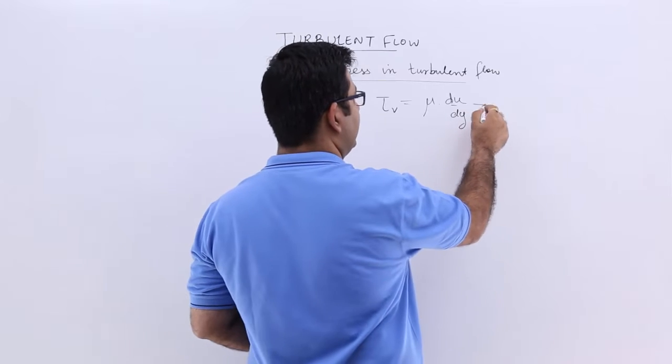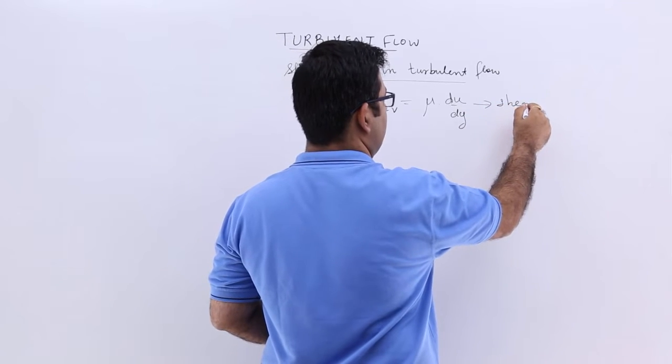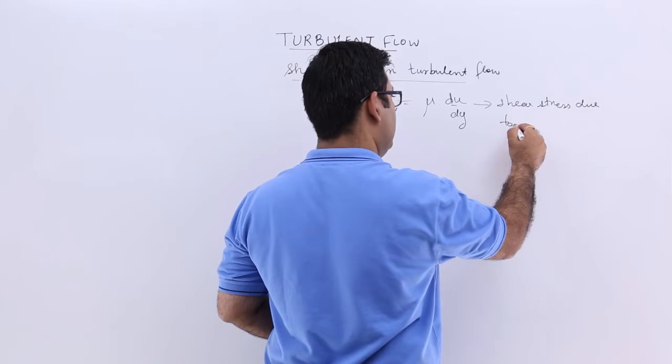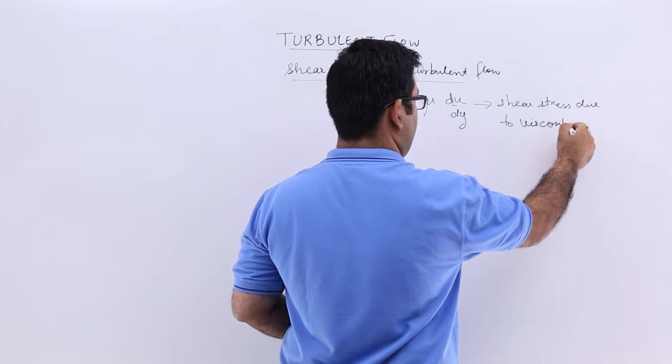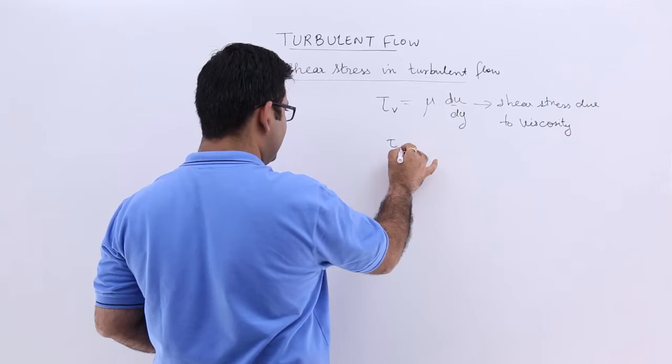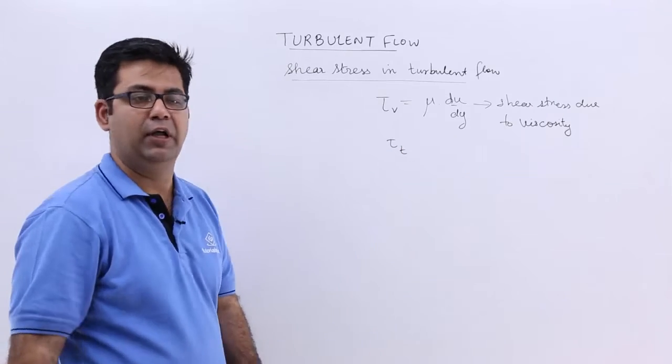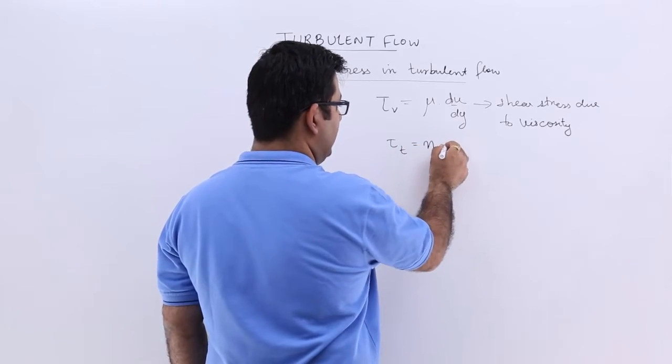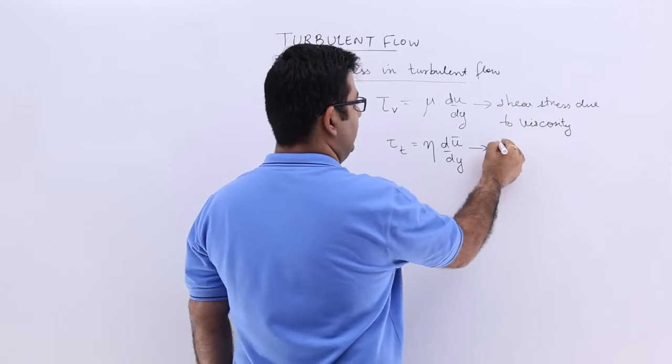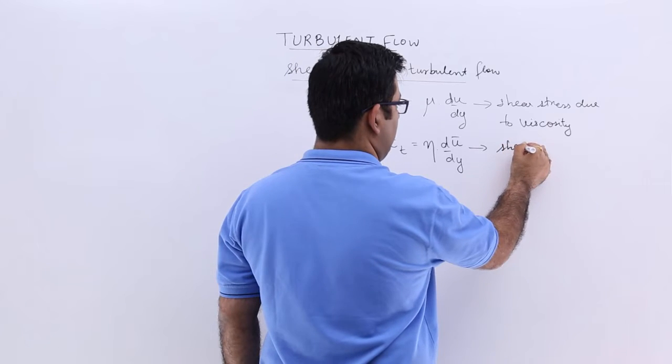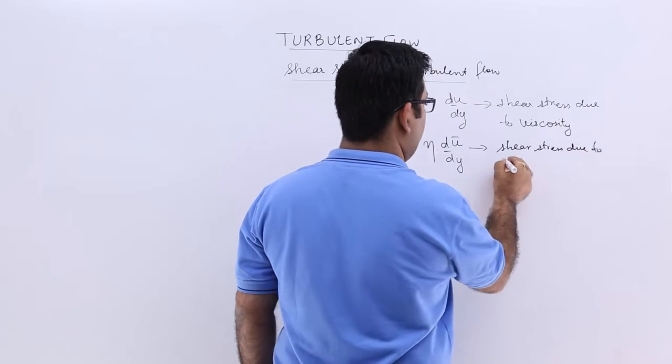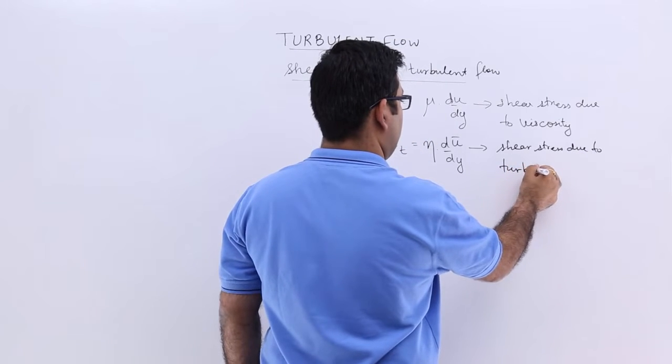So this is the shear stress due to viscosity of fluid. The second stress is due to turbulence, tau t. This is equal to eta into du bar upon dy, which is the shear stress due to turbulence.